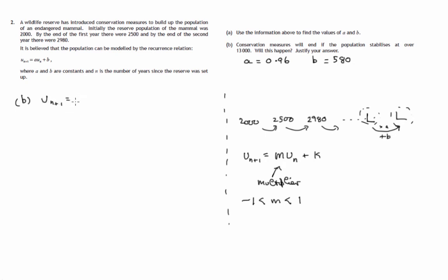Let's just write down the recurrence relation that we've discovered we're working with. And the observation that since the multiplier, 0.96, lies between negative 1 and 1, there is a limit.